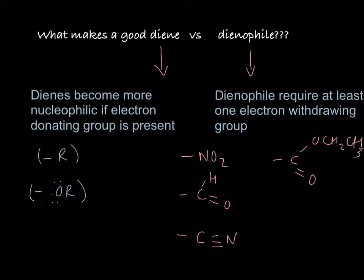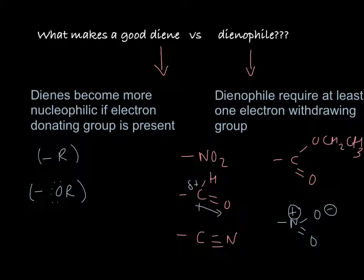If you draw out the structure of NO₂, it contains a positive charge on N: N double-bonded to O, bonded to O⁻, with a positive charge on N. Notice that there is a positive charge directly on the nitrogen, which makes it an electron-withdrawing group. The aldehyde is also an electron-withdrawing group via resonance — oxygen is more electronegative, so it pulls electrons away from the carbon giving it a partially positive charge. Same thing with nitrogen and with the ester. These partial positive charges on the carbons make these good electron-withdrawing groups.